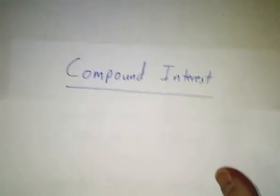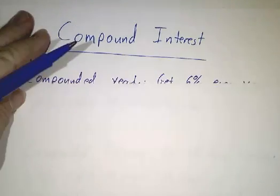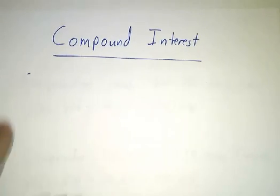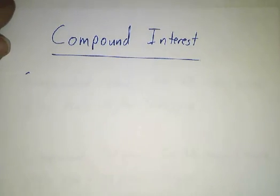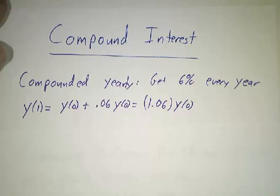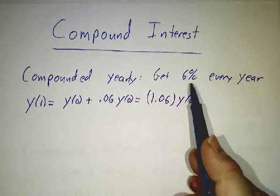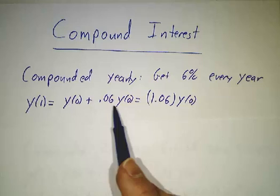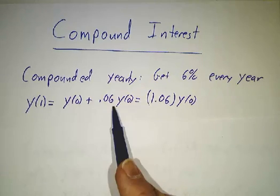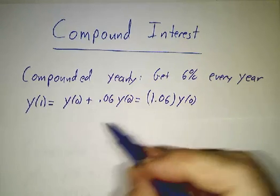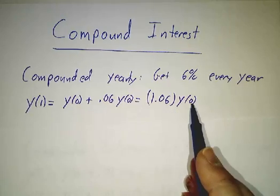Finally, a comment on the example we did. It was really compound interest. You have $1,000 in the bank, and the bank is paying you 6% interest. If they compound it yearly, that is, every year they give you 6%, then after a year, you have the money you started with plus 6%, and that's 1.06 times what you started with.